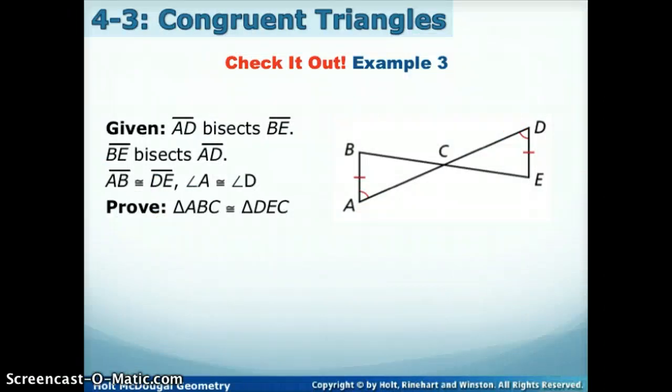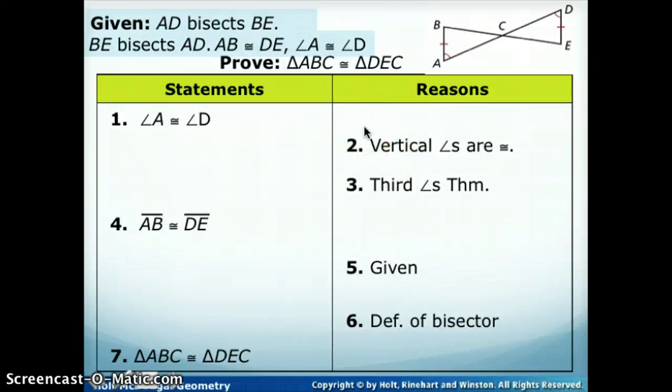So now we're going to look at a couple proofs. So here's the picture that goes along with it. It tells us that AD bisects BE, and BE bisects AD, and then in the picture as well, the symbols show AB is congruent to DE, and A is congruent to D. And our goal is to prove these two triangles are congruent, ABC and DEC. So remember our two-column proof. Don't worry, we don't have to create our own proof. We just have to fill in the pieces of the proof we're given.